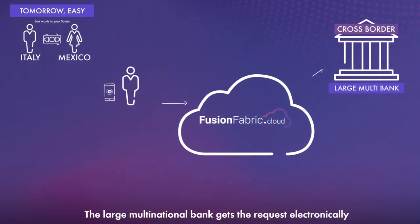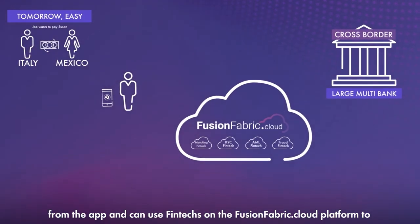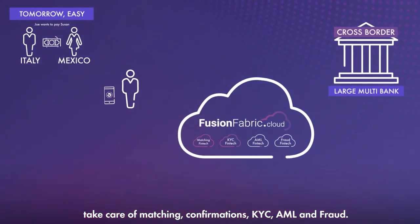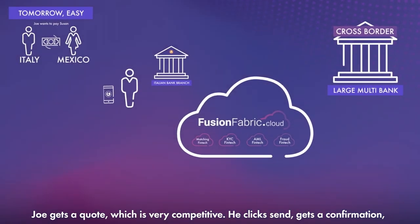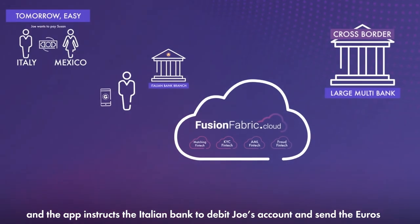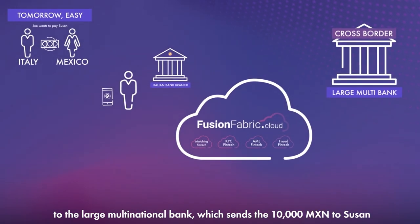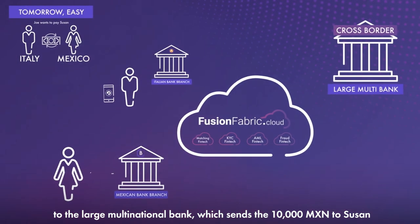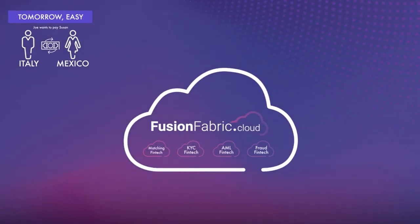The large multinational bank gets the request electronically from the app and can use fintechs on the FusionFabric.Cloud platform to take care of matching, confirmations, KYC, AML, and fraud. Joe gets a quote, which is very competitive. He clicks send, gets a confirmation, and the app instructs the Italian bank to debit Joe's account and send the euros to the large multinational bank, which sends the 10,000 Mexican Pesos to Susan while taking care of all the FX workflows and processes. Done.